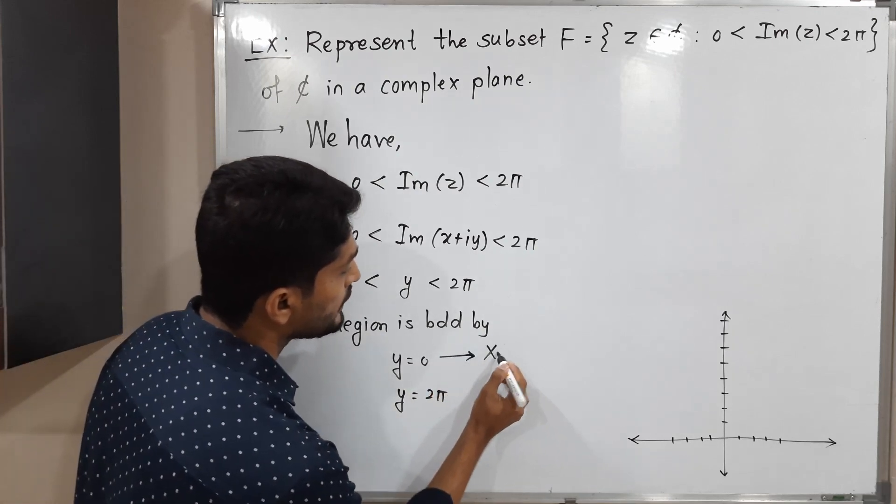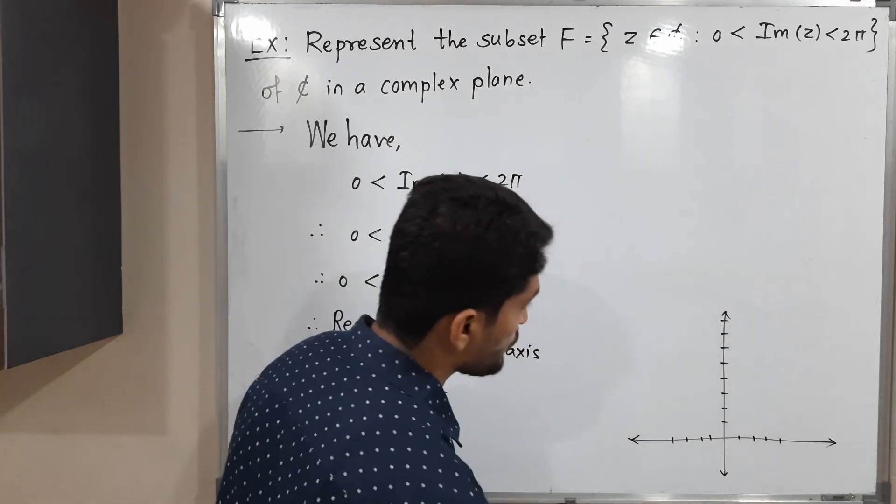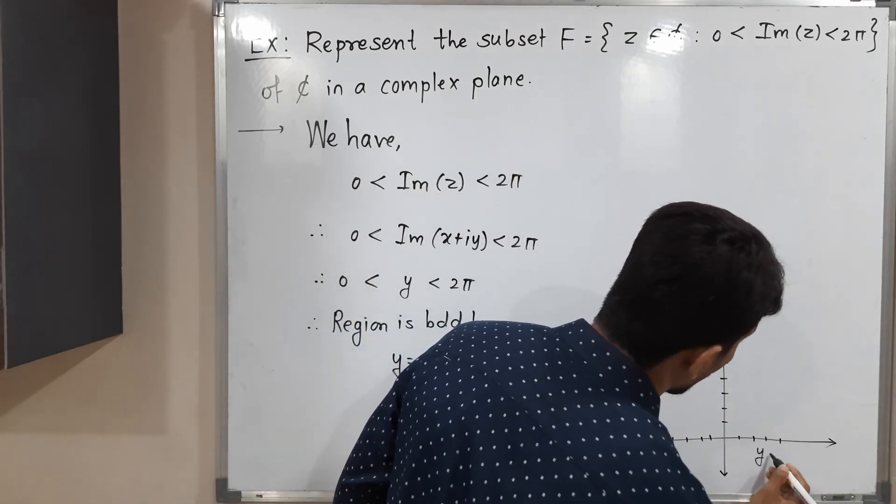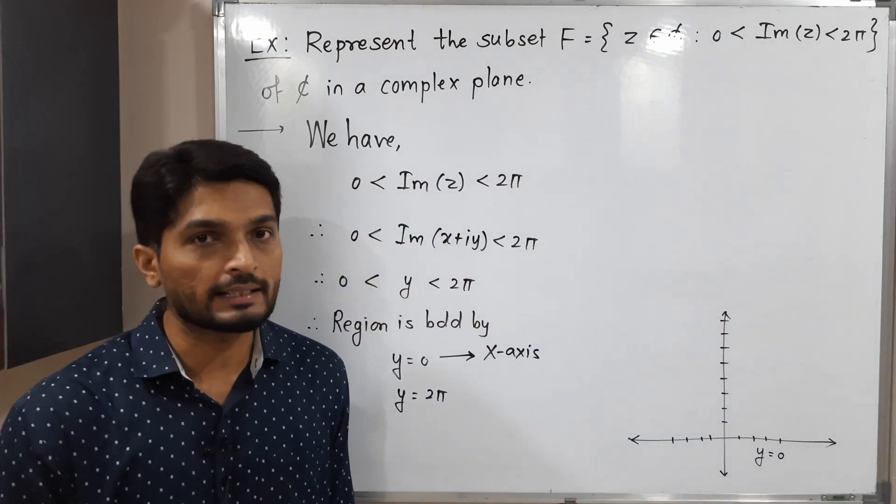Y equals 0, this is equation of what? X-axis. Y equals 0, this is equation of x-axis, or in a complex plane we say it is the real axis.